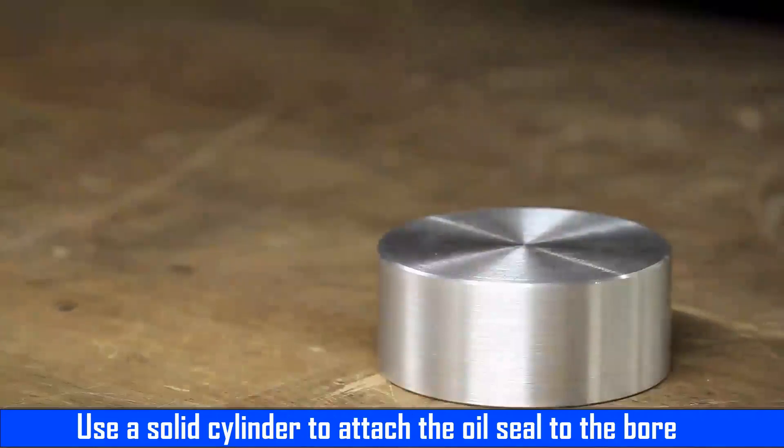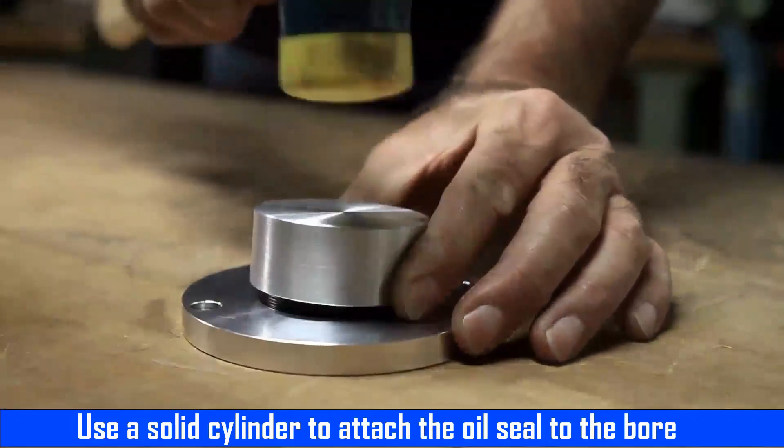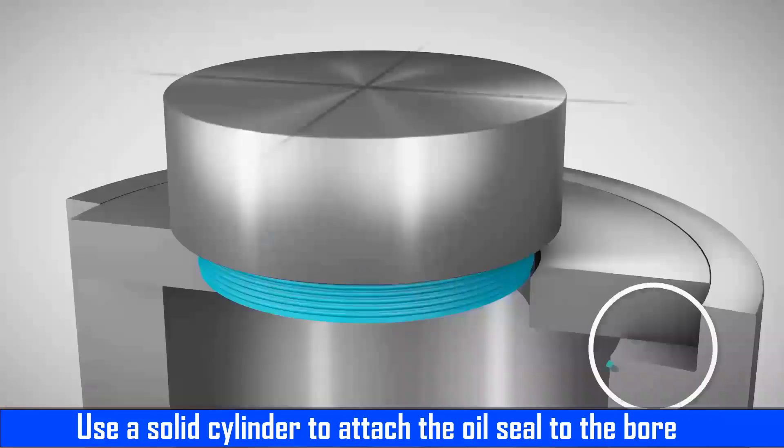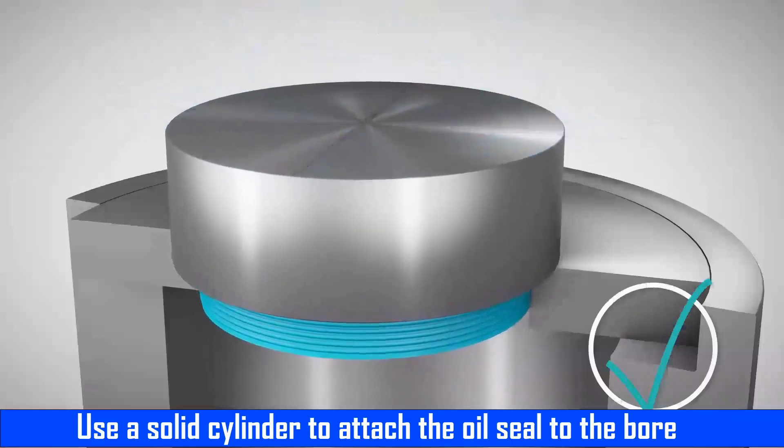Use a solid cylinder to attach the oil seal to the bore. When hitting the hammer, alternate crosswise so that the pressure is evenly distributed.